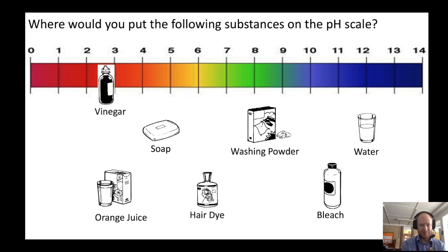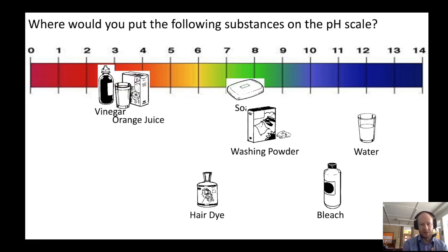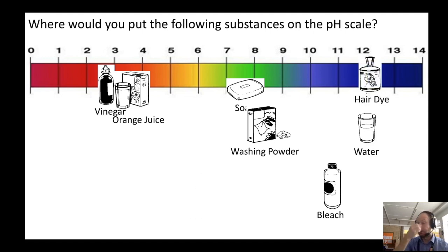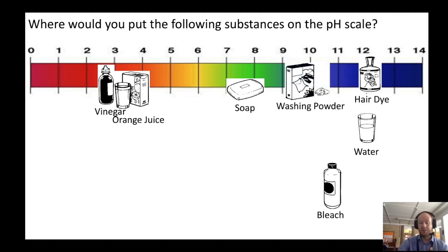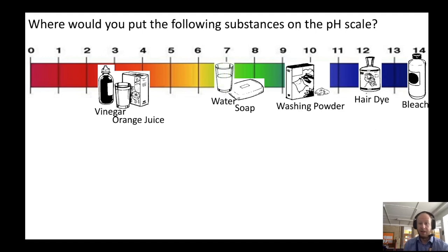Vinegar will be here between two and three. Orange juice is about three or four. Soap is just below seven. Hair dye is about twelve — it's very very alkaline. Washing powder is about ten. Bleach is very highly alkaline, about fourteen. And water is dead in the middle at seven.